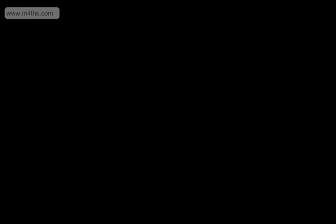Again, different textbooks and different courses might present it slightly differently, but that's the main gist of it. In this video, we're going to work through a very basic example of the proof by induction, and then in later videos we'll go on to some harder examples. What we're asked to do here is prove by the method of mathematical induction the following statement for positive integer values of n. We've got a summation: the sum from r equals 1 to n of r, which is equal to one half n times n plus 1.